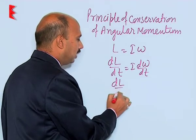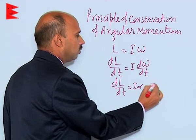So, we will be getting dL upon dt is equal to I alpha which is equal to torque.